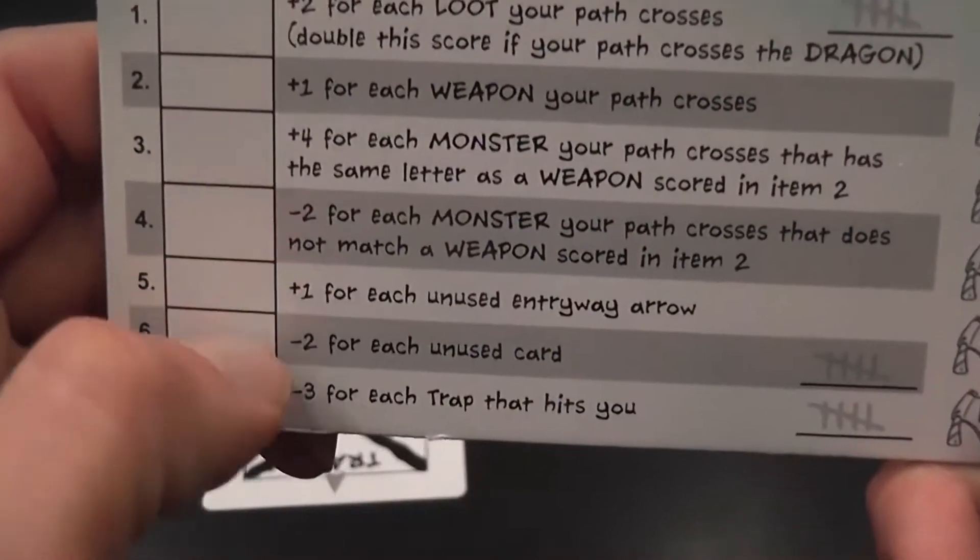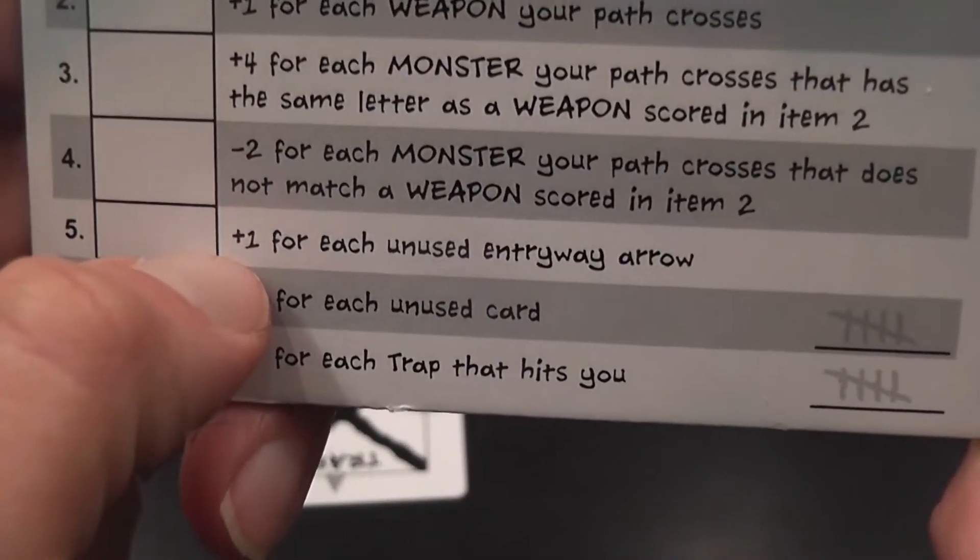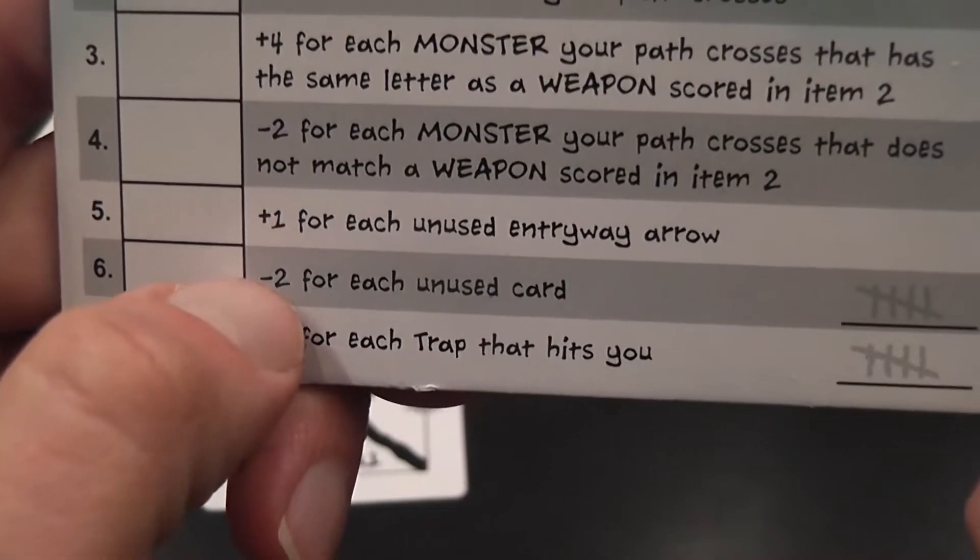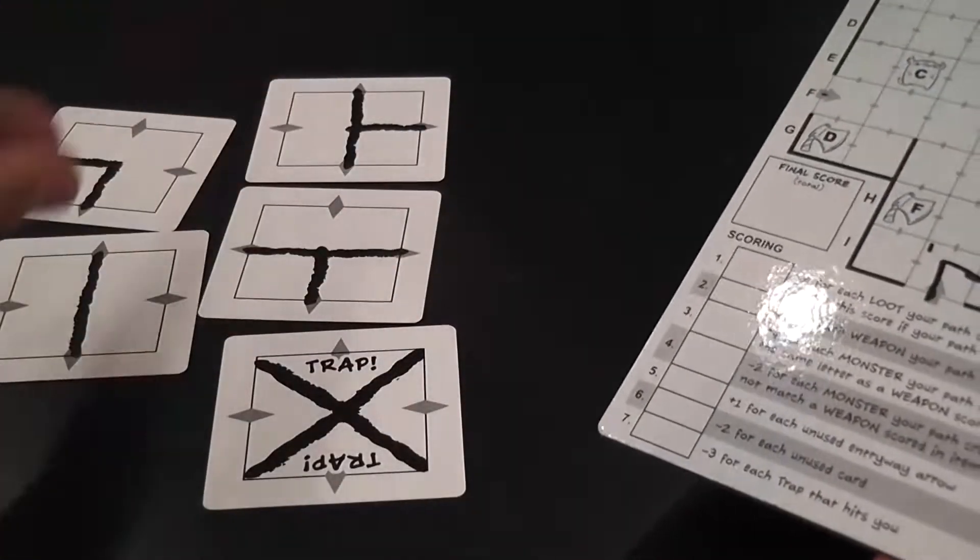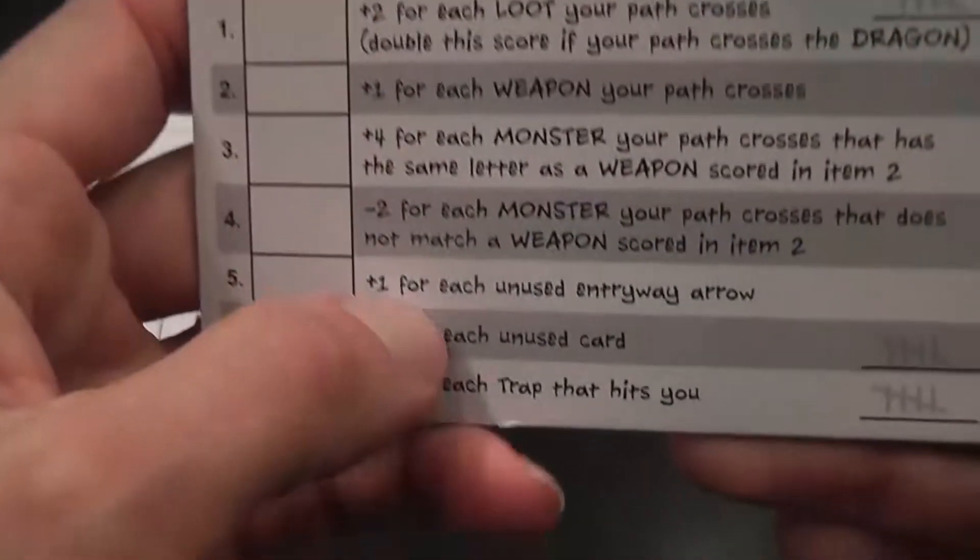Minus two for each monster that you visited without the right weapon, plus one for each unused entryway, minus two for each unused card. That means if during the game you're unable to place a card, then you get a minus two.